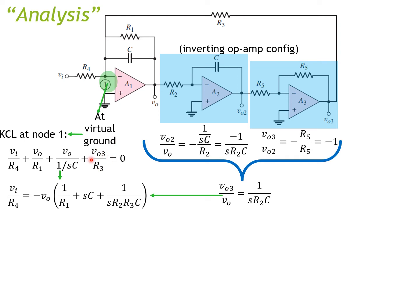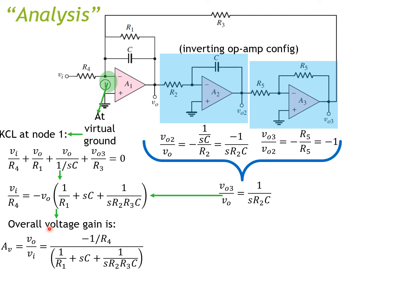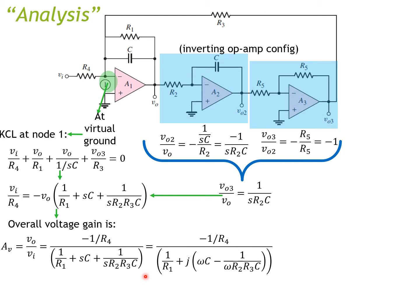Combining the KCL equation with the earlier VO3/VO expression, we substitute VO3 in terms of VO, leaving the equation only in terms of VO and VI. Therefore the overall voltage gain is VO over VI equals negative (1/R4) divided by (1/R1 + sC + 1/(s·R2·R3·C)).